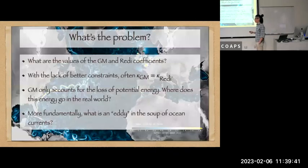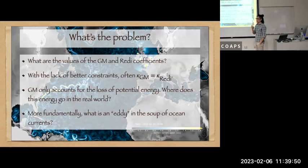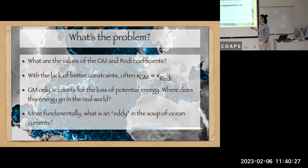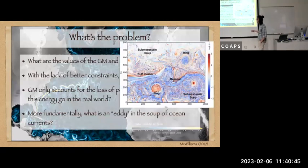The problem is pretty big. Mathematically it's all fine and dandy, but the question becomes: what are the values of those kappa_GM and kappa_Redi? We don't really have a good estimate for this. With the lack of better constraints, what people often do operationally is they just set kappa_GM equals kappa_Redi. There's no physical reasoning to do this; it's just that we don't have a better estimate. If you remember the schematic, GM basically tries to flatten out the isopycnal hump to its mean isopycnal state, but it only accounts for the loss of potential energy. In the real world, this potential energy is converted to kinetic energy, but GM does not take part of this conversion process. More fundamentally, the question is: what is a 'eddy' in a soup of ocean currents?